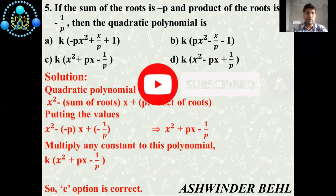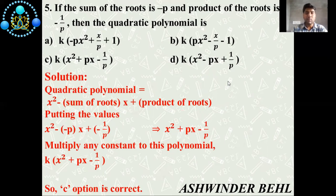So now we will discuss the solution. As we know that the quadratic polynomial is x² - sum of roots × x + product of roots. Putting the values here, sum of roots according to question is given -p and product of the roots is given -1/p. So what we get here: x² + px - 1/p. Multiply any constant to this polynomial. So our equation becomes k(x² + px - 1/p). So c option is correct answer.